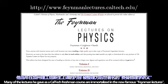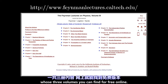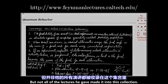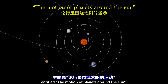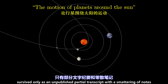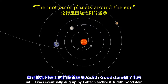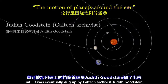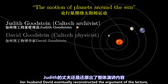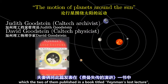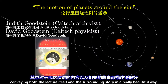Many of the lectures he gave to a Caltech freshman course are immortalized in the now famous Feynman Lectures, whose three volumes you can find for free online. But not all of the lectures he gave made it into this collection. One in particular, a guest lecture given on March 13th, 1964, entitled "The Motion of Planets Around the Sun," survived only as an unpublished partial transcript with a smattering of notes buried in the office of one of Feynman's colleagues, until it was eventually dug up by Caltech archivist Judith Goodstein. Despite the absence of some crucial blackboard drawings, her husband David eventually reconstructed the argument of the lecture, which the two of them published in a book titled Feynman's Lost Lecture, conveying both the lecture itself and the surrounding story in a really beautiful way.